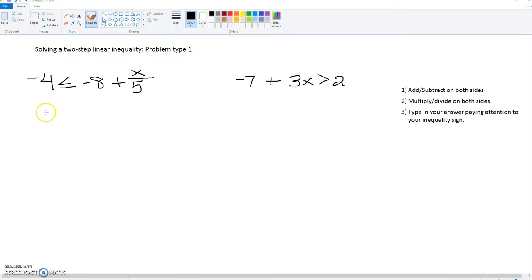Solving a two-step linear inequality, problem type 1. I've put up two different examples, and I've also gone ahead and put up our steps.